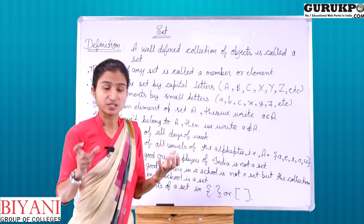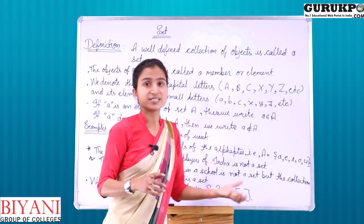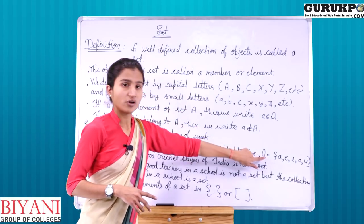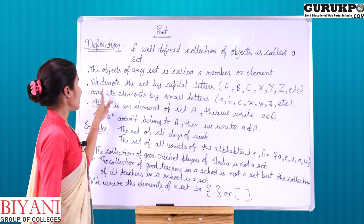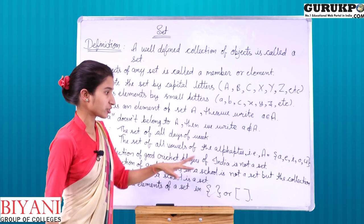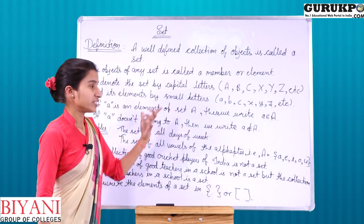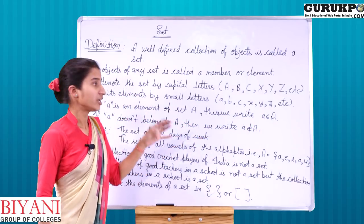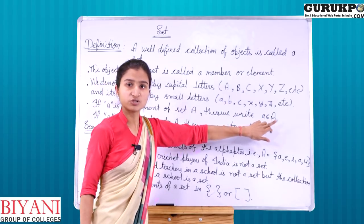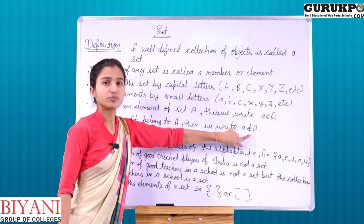किसी भी set के objects जो उसके अंदर हैं, जैसे A, E, I, O, U — ये एक set है। इस set में जितने भी elements हैं, वो इसके elements या members कहलाएंगे। Second point: we denote the set by capital letters. Set को always capital letters से denote किया जाता है, and its elements by small letters जैसे a, b, c, x, y, z। If small 'a' is an element of a set, then we write 'a ∈ A' (a belongs to A). If a does not belong to A, then we write 'a ∉ A'.